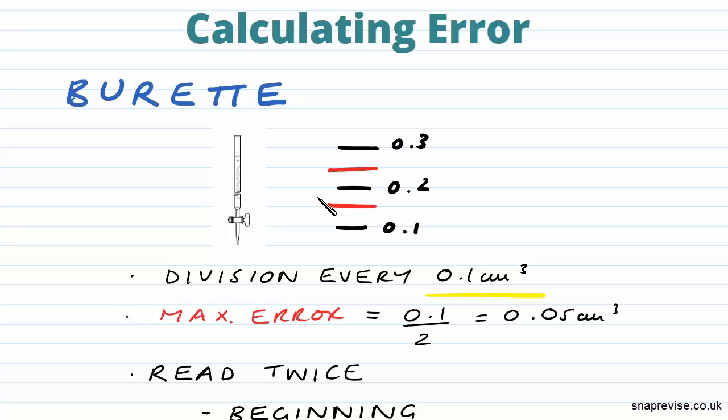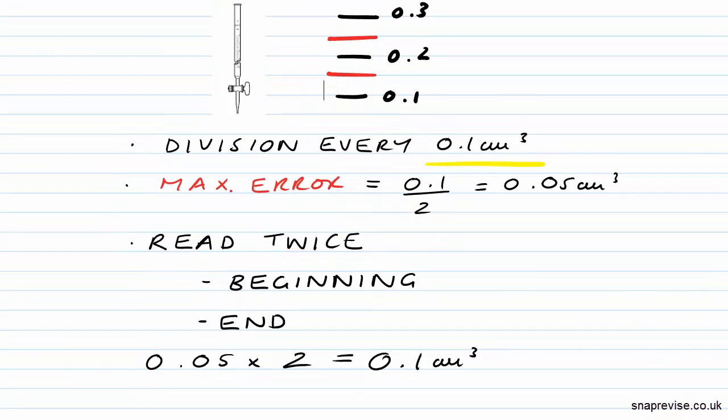Now with burettes we read twice. We read once at the beginning and once at the end. It's like a before and after measurement. And it's for that reason that we multiply the error by 2. So if the error was 0.05 cm cubed for each reading, we're taking 2 and the overall error is 0.1 cm cubed.